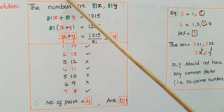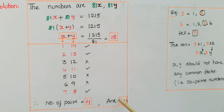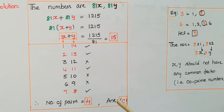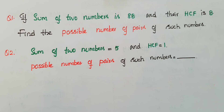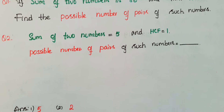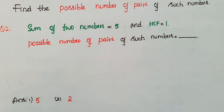The number of pairs is equal to 4, so option C is correct. Please do these practice questions, and here are the answers.